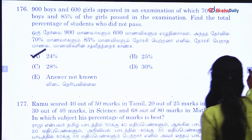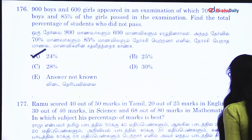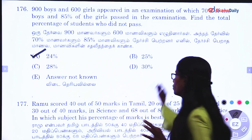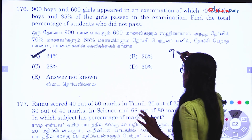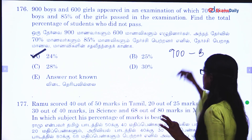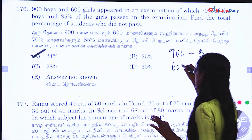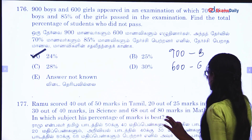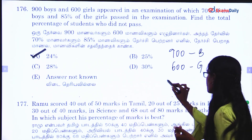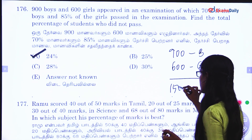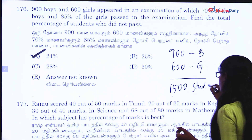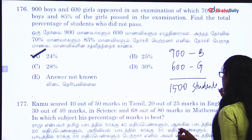First question. There are 900 boys and 600 girls, so total is 1500 students. This is the general setup.